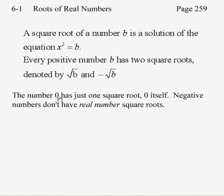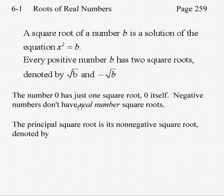The number zero has just one square root, and that is itself, which is zero. Negative numbers don't have real number square roots. The principal square root is what we call its non-negative square root, and that's denoted by this symbol, the square root of b.